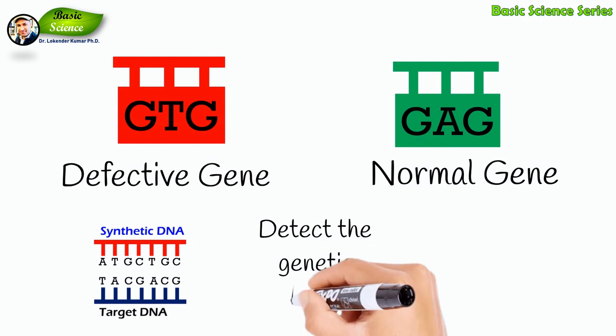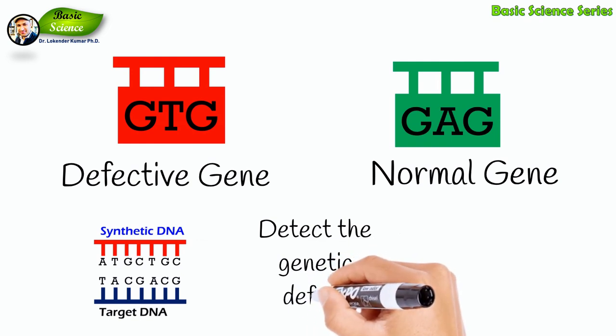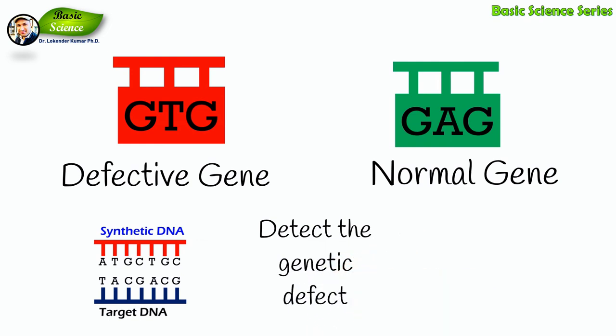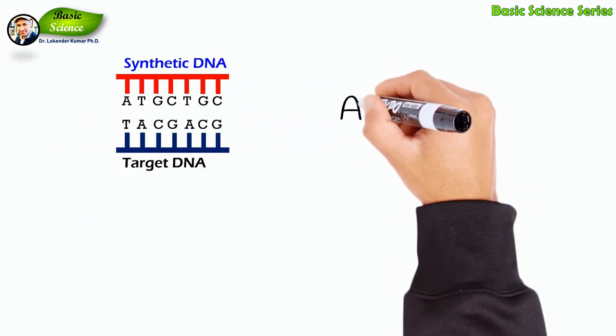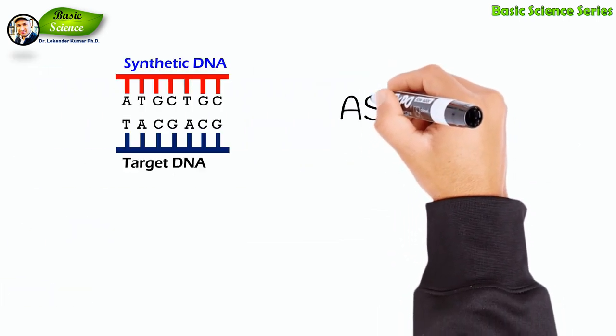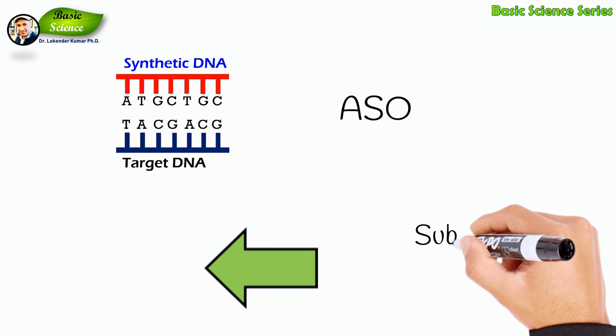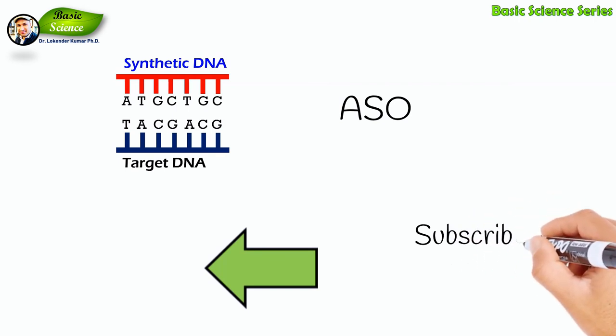Using this technology, we can detect the presence of the gene defect in any sample. I hope now you have all the basic information for ASO, which is allele-specific oligonucleotide.